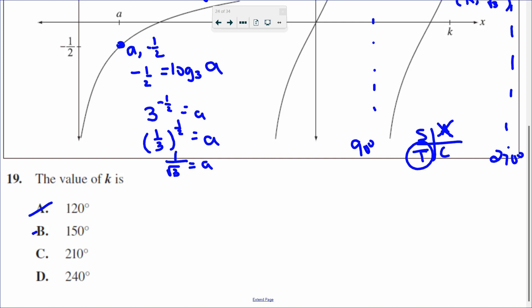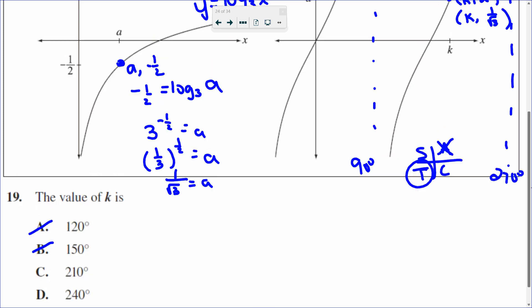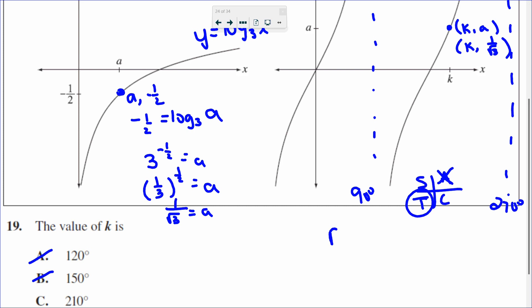So looking at my options, I can knock off A and B because I know that tangent is positive in quadrant three. So what I'm trying to find is the point on the unit circle that has a tangent value of one over root three. Now, tangent is the ratio of sine over cosine.